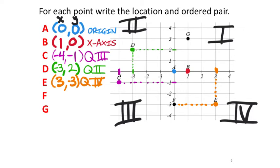For point F — its x value, following up along the y-axis to the x-axis, is zero. Its corresponding y value is directly at negative 3. It's not in a quadrant specifically — it's right between quadrants 3 and 4, so it's right on the y-axis.